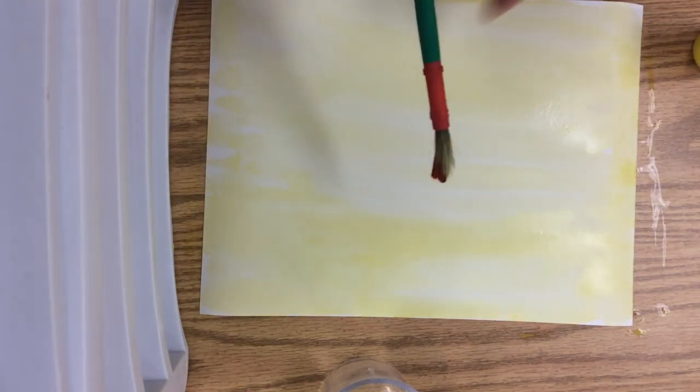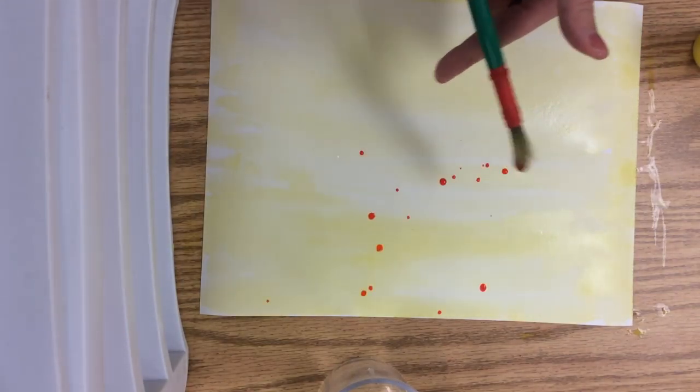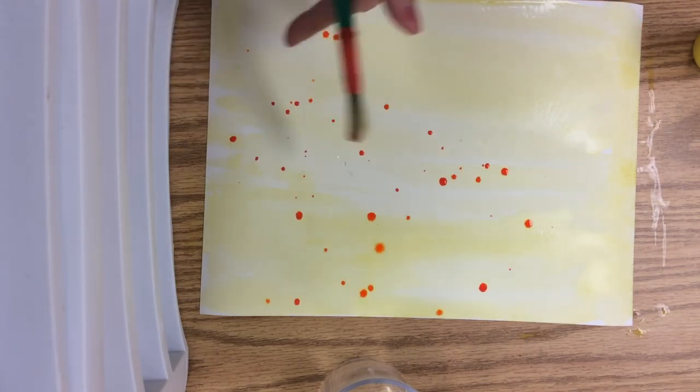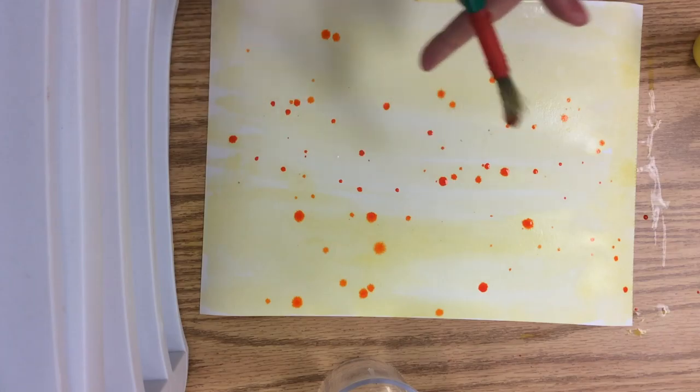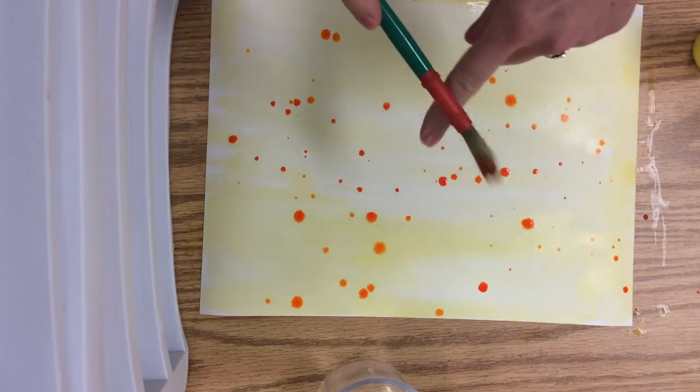Next, I'm using some orange liquid watercolors to do some splattering on my paper. Just tap the brush against your finger and the splatters will come out of the brush.